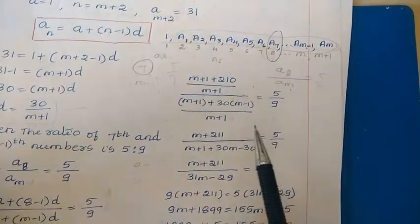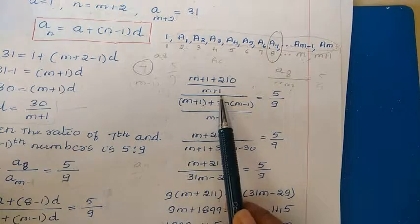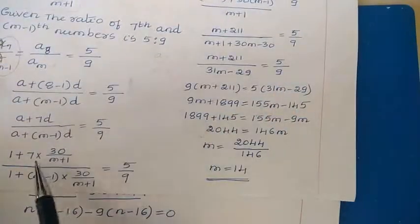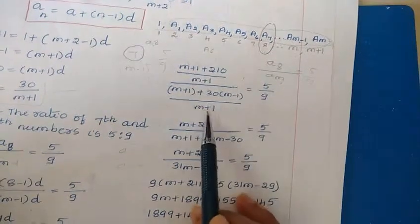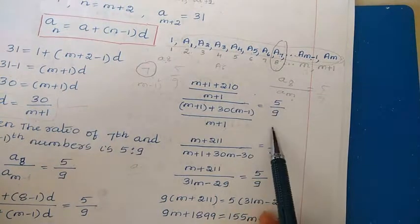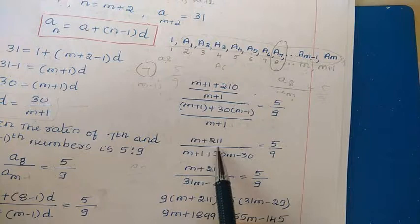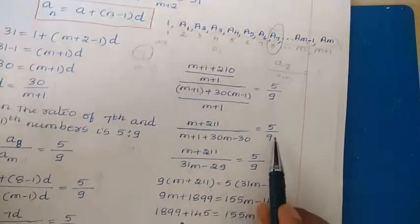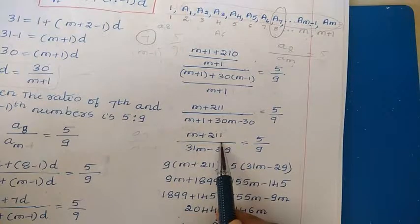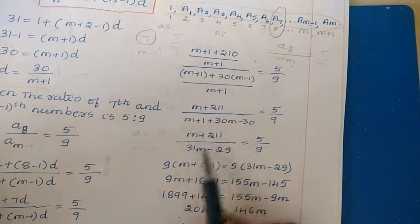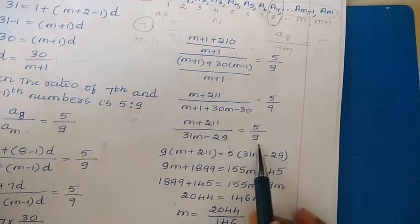Taking LCM as (M+1) in numerator and denominator: the numerator becomes (M+1) + 210 and the denominator becomes (M+1) + 30(M−1). Simplifying: numerator = M + 211, denominator = M + 1 + 30M − 30 = 31M − 29. So (M + 211)/(31M − 29) = 5/9.